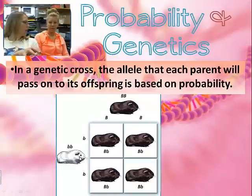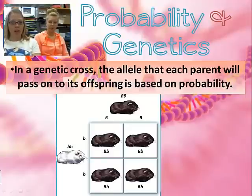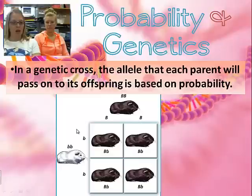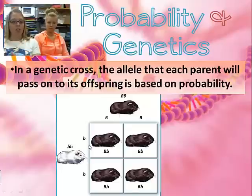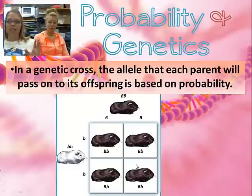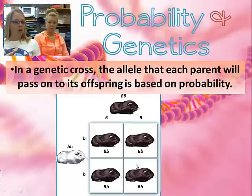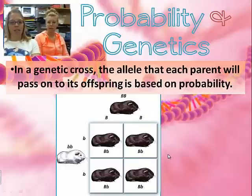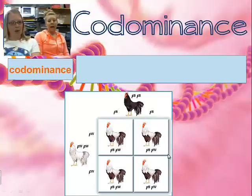Here's a worked example with guinea pigs — one purebred black, one purebred white. Purebred black gets big B, big B; purebred white gets little b, little b. Push the little b's across — everybody gets a little b. Push the big B's down — every one of their offspring is hybrid. Note: animals like this are simpler than humans. Humans have multiple genes controlling skin color, so a mix produces a blend, but for this guinea pig it's simply black or white.